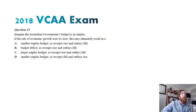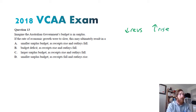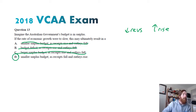Question thirteen — the government's budget is in surplus. If the rate of economic growth slows, revenues are going to fall and outlays are likely to rise. A smaller surplus with receipts rising and outlays falling? No — receipts are going to fall. A budget deficit with receipts rising and outlays falling? Also not true. A larger surplus? Not going to happen with less revenues and more outlays. So the answer is a smaller surplus budget — which was apparently poorly answered in the exam year.